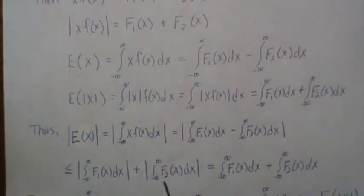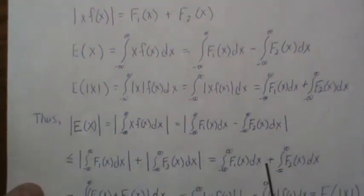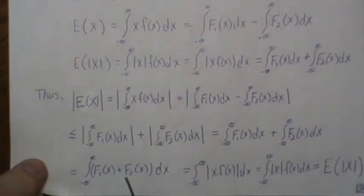If we look at the absolute value of each of these, now these are all positive functions, so we can just take away the absolute value. Then we can take it into one sum and integrate.